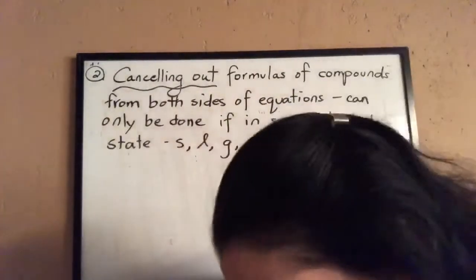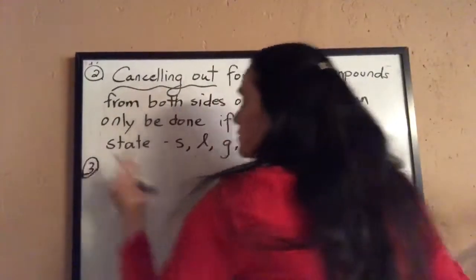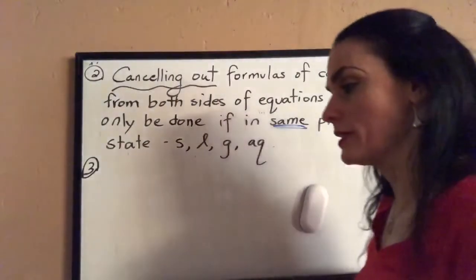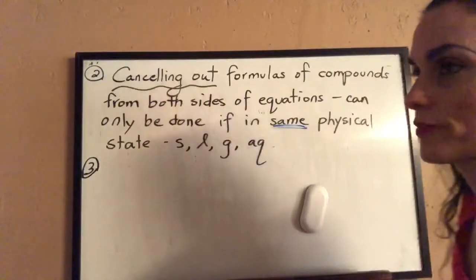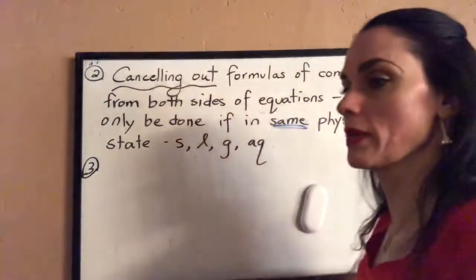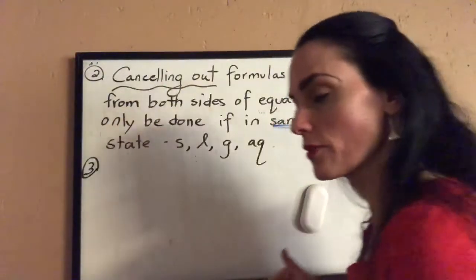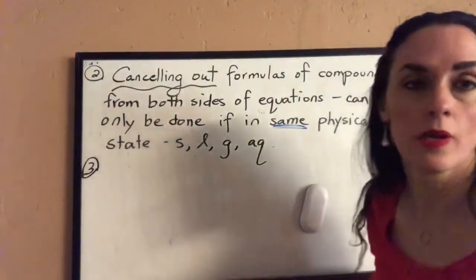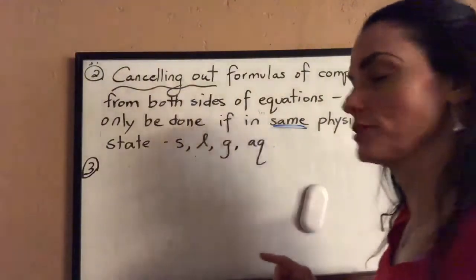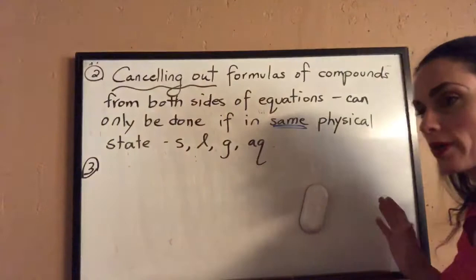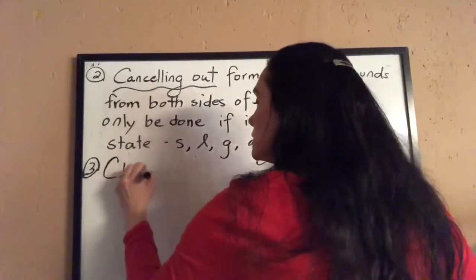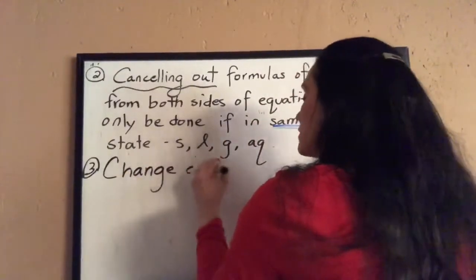The third way to manipulate equations is changing the coefficients of the formulas. If we see a factor of two or three, we can multiply the coefficients of all reactants and products in that equation by that factor. And if we change the coefficients, we also need to apply that same factor to the amount of heat associated with that reaction.